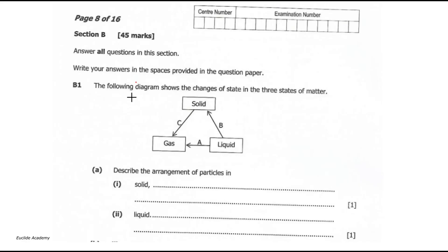This is Section B of the 2021 Paper 2 Science exam. Starting with B1, Question 1 of Section B — write your answers in the spaces provided on the question paper. The following diagram shows the changes of state in three states of matter.